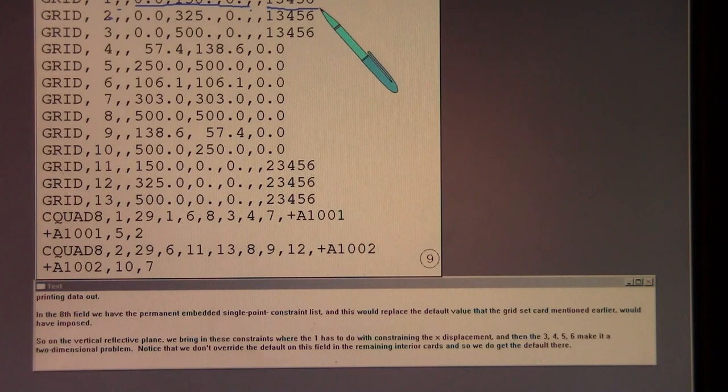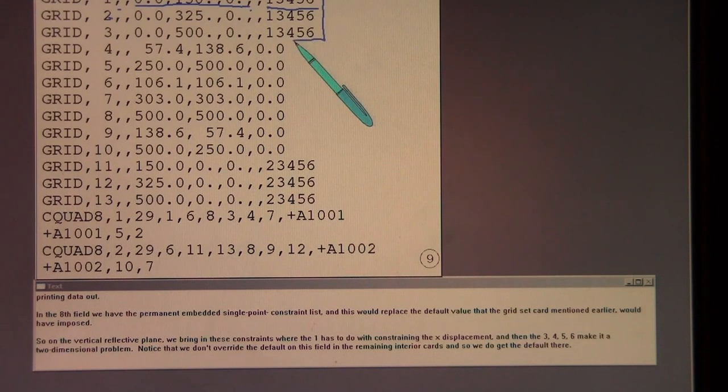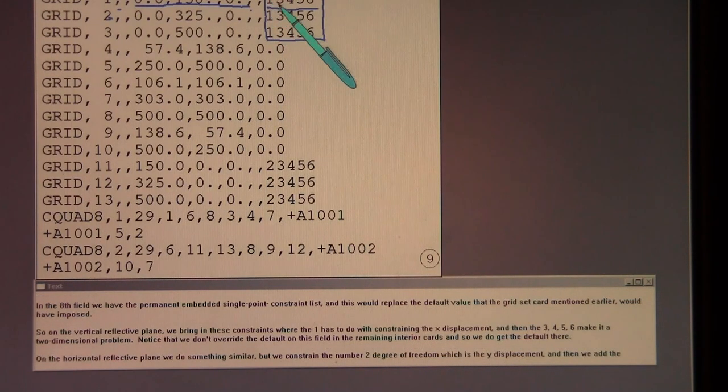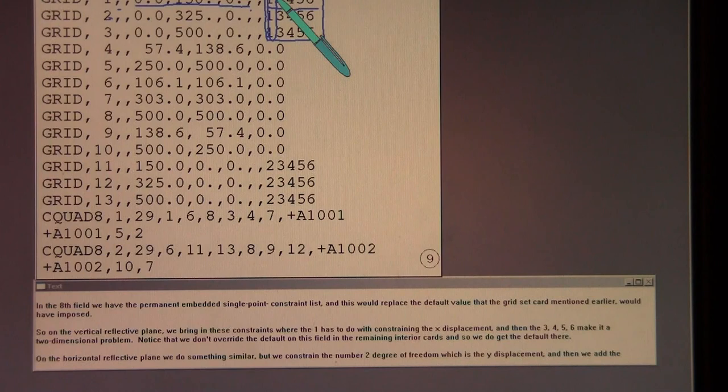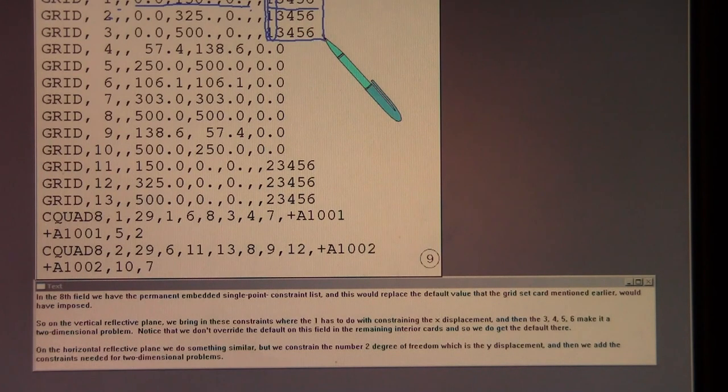In the eighth field we have the permanent embedded single point constraint list. And this would replace the default value that the grid set card mentioned earlier would have imposed. So on the vertical reflective plane we bring in these constraints where the one has to do with constraining the X displacement. And then the three, four, five, six make it a two-dimensional problem.